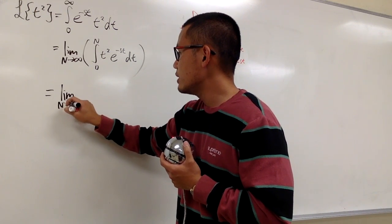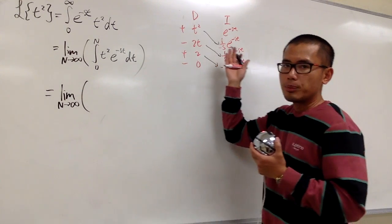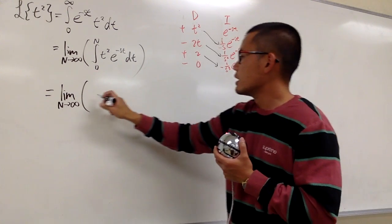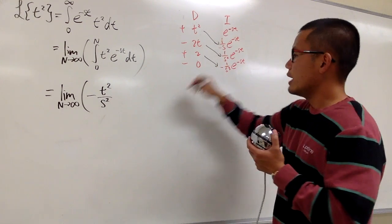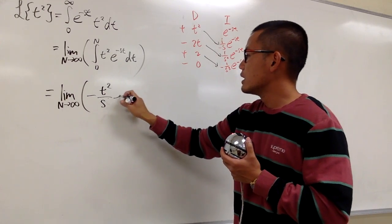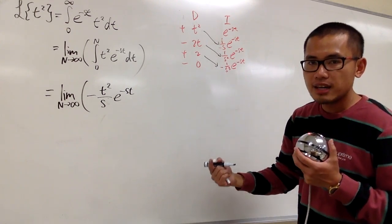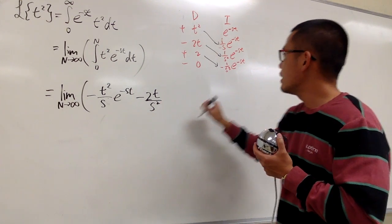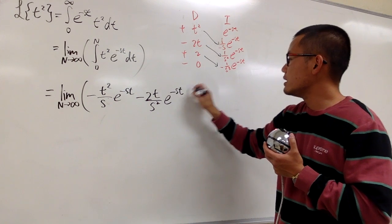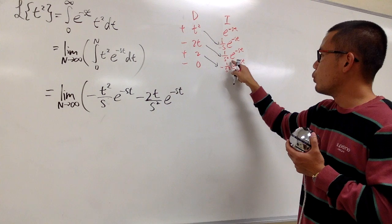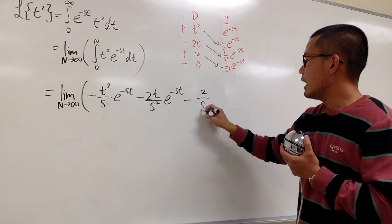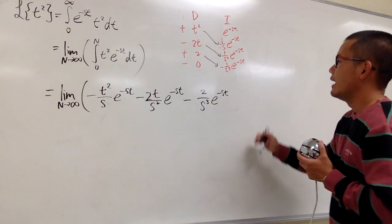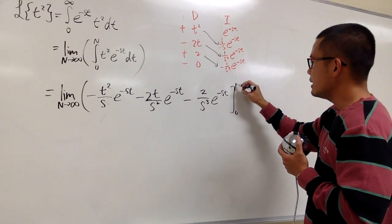This is going to be the limit as N goes to infinity. Opening the big parentheses, the result of integration gives us: first, positive t squared times 1 over negative s, written as negative t squared over s times e to the negative st. The next term is negative 2t times 1 over s squared, giving negative 2t over s squared times e to the negative st. Then 2 times negative 1 over s cubed, giving negative 2 over s cubed times e to the negative st. All evaluated from 0 to N.